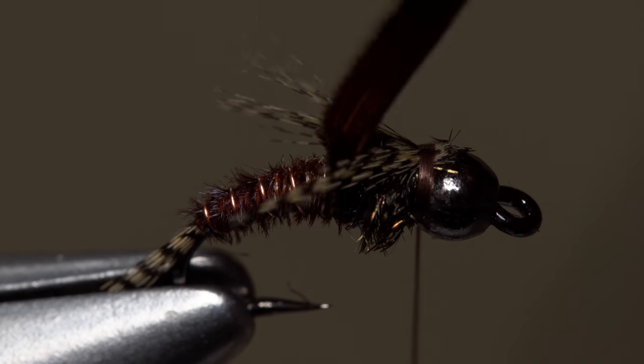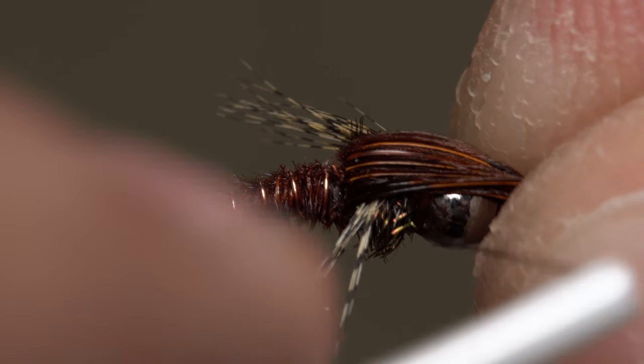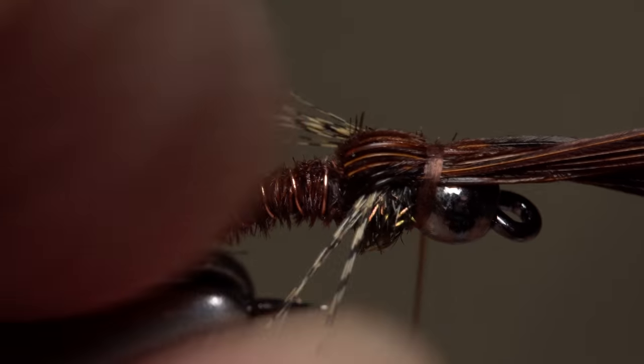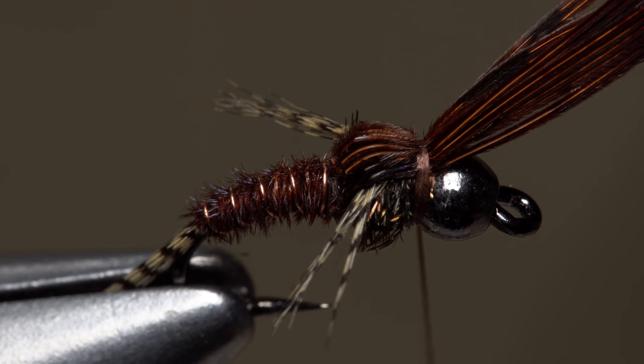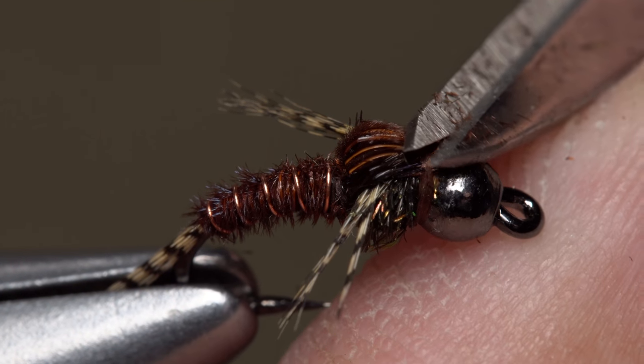Next, pull the pheasant tail fibers forward out over the bead between the sets of legs to form the wing case. Take two or three very tight turns of tying thread to bind them down. Then, snip the excess butt ends off as close as possible without cutting anything else in the process.